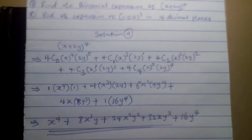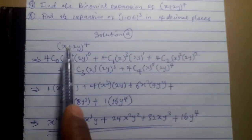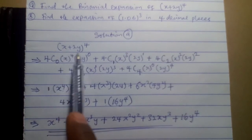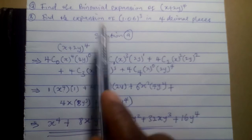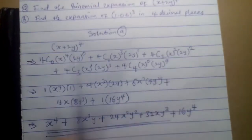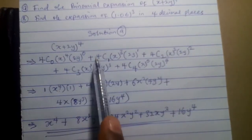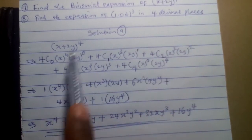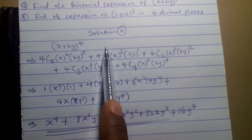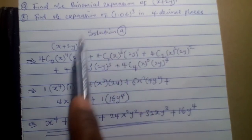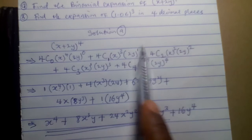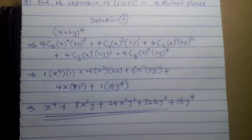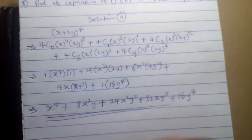Remember what we did: x is the first value and 2y is the second value. Using the binomial expansion principle, we start with 4C0 and go through to 4C4. At the end we simplify everything. Now let us solve question number 2, Solution 2.